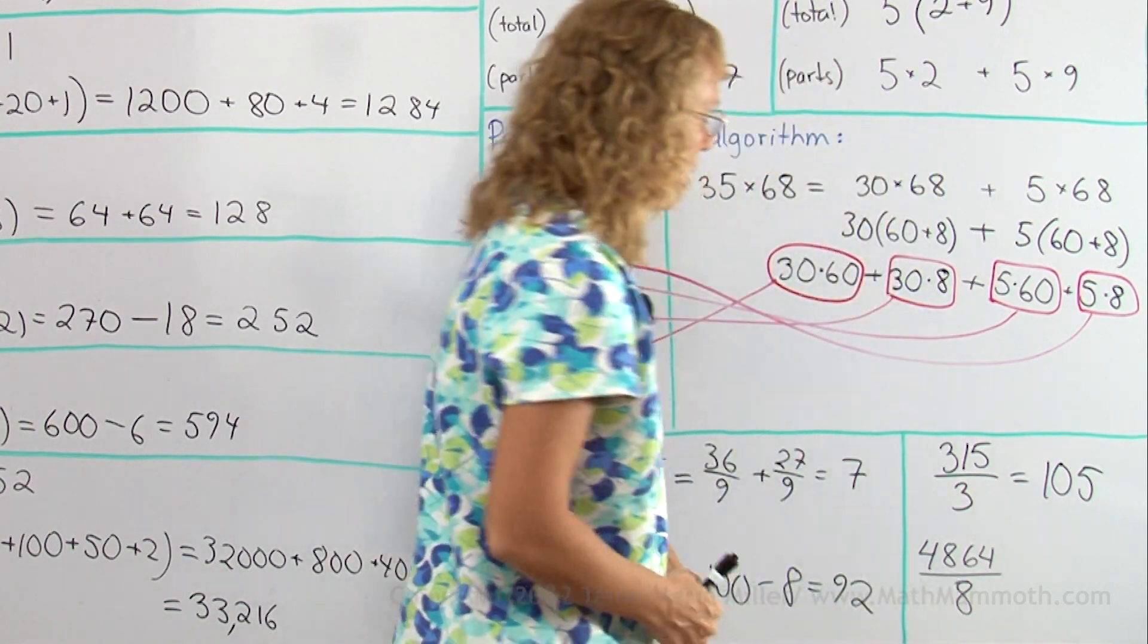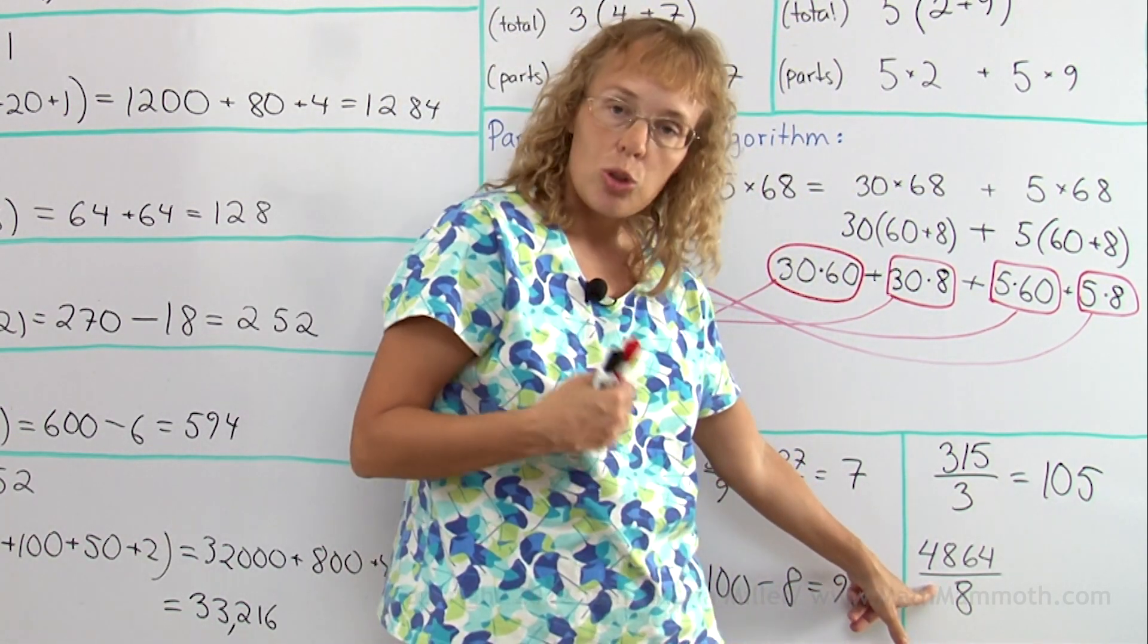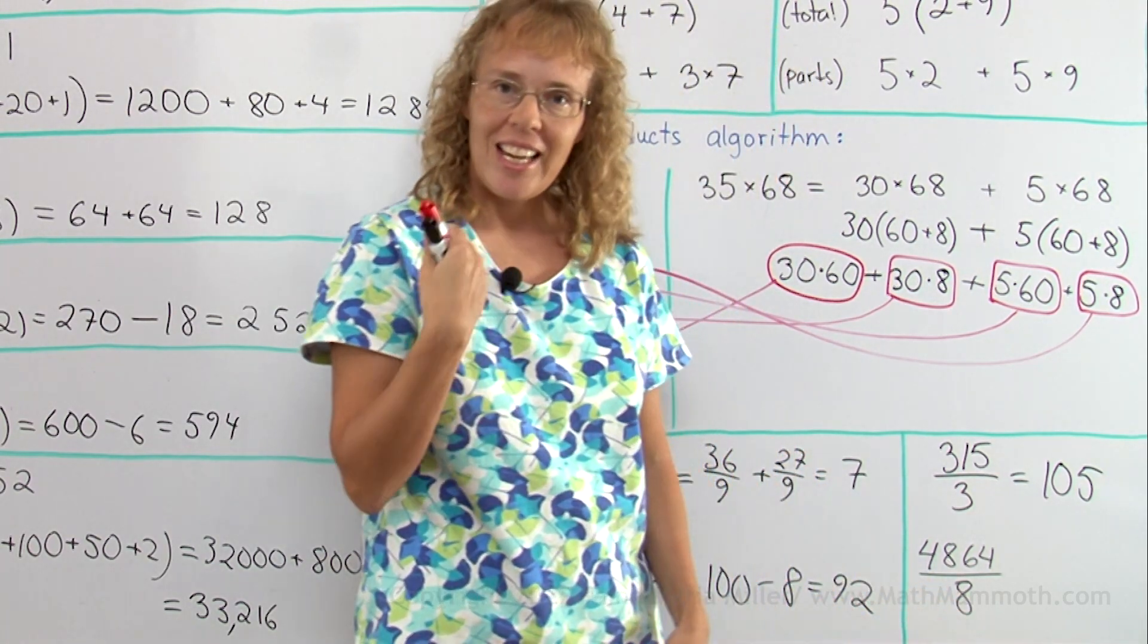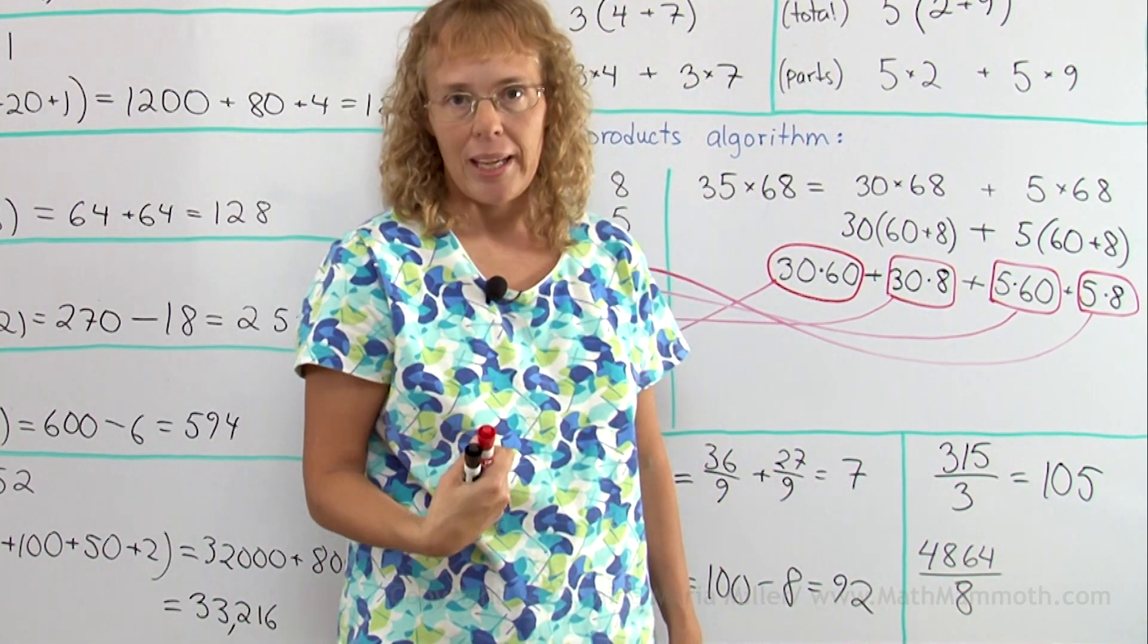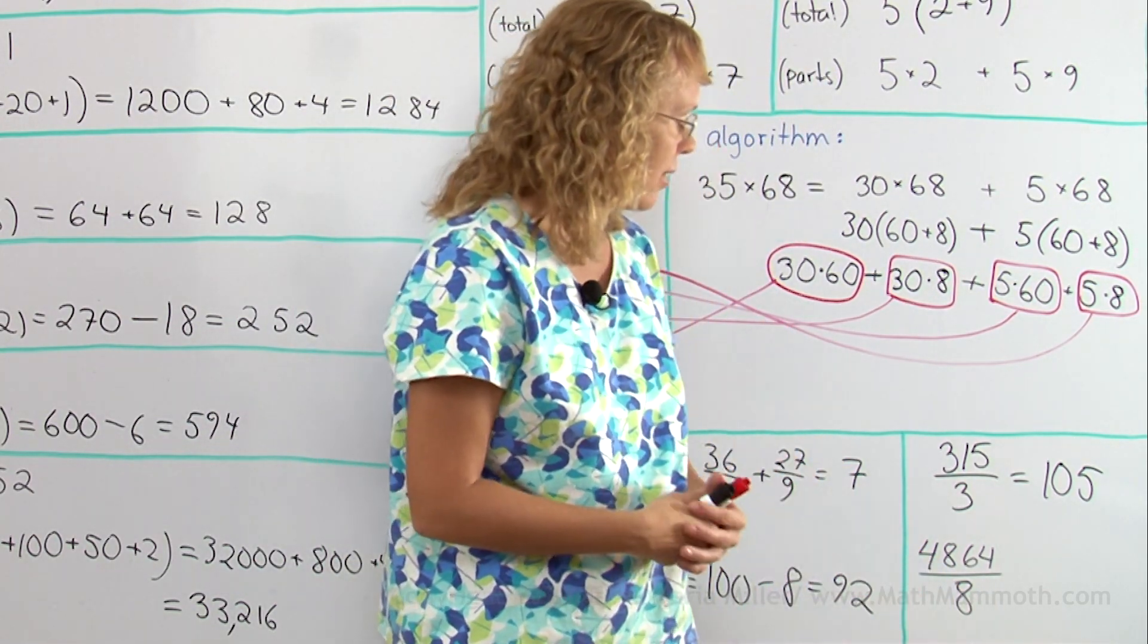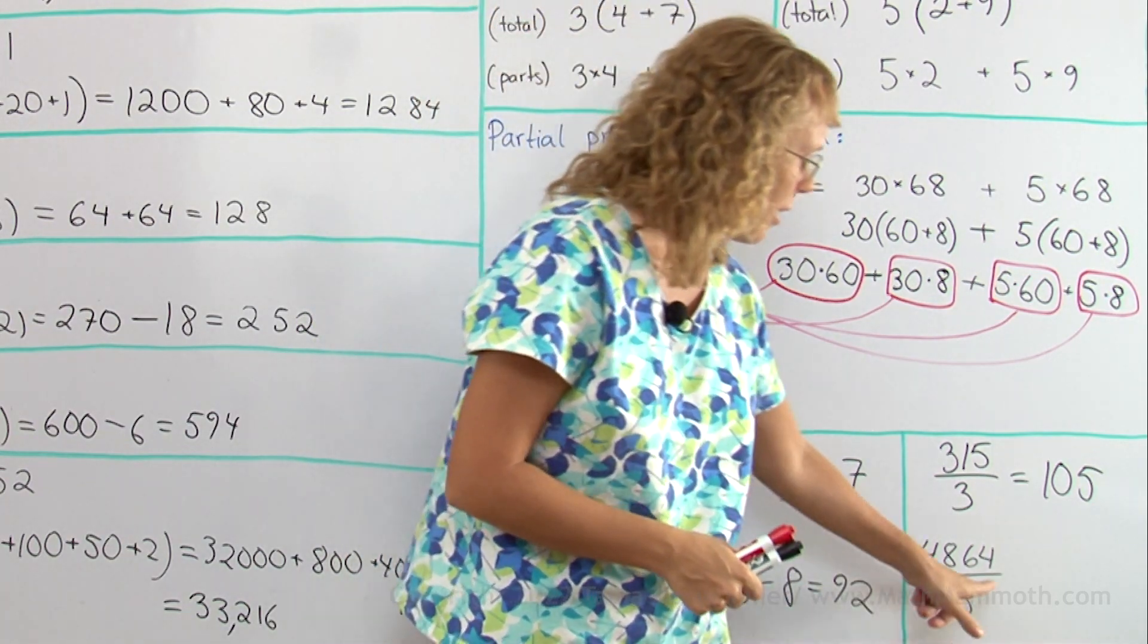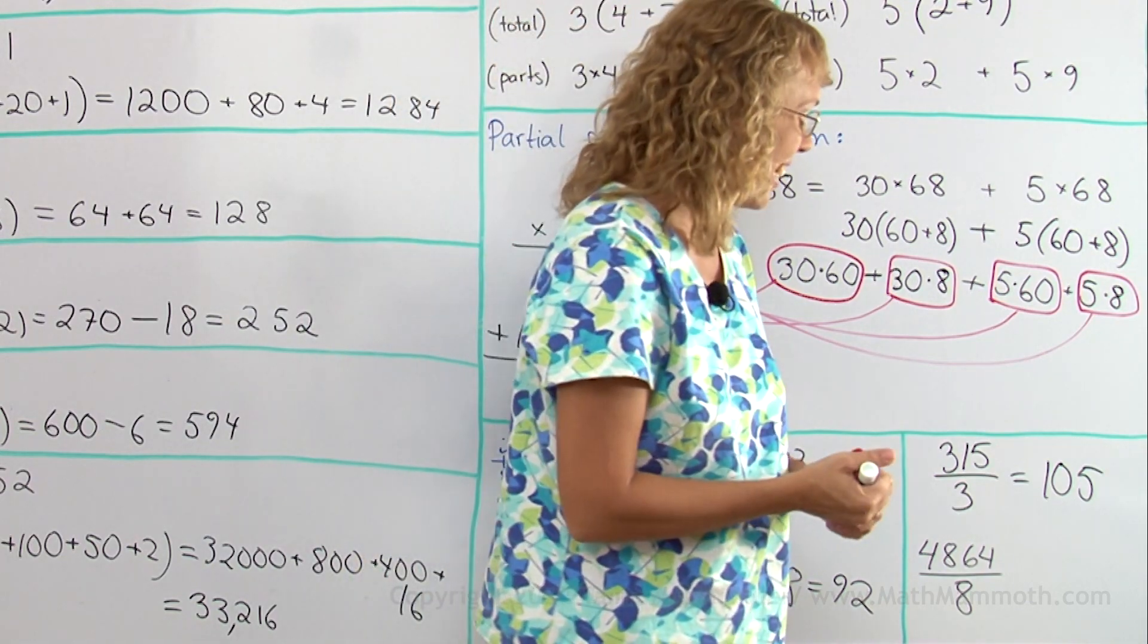Over here, 4,864. I will break this into two parts, not into four parts, but two parts, because 4,800 is divisible by 8, and 64 is divisible by 8. So 4,800 divided by 8 is 600, and then 64 divided by 8 is 8. So the answer is 608.